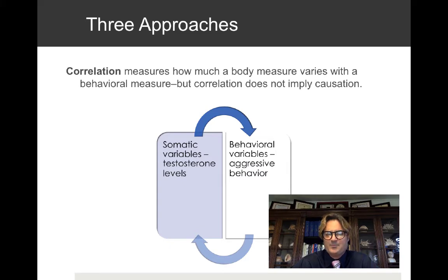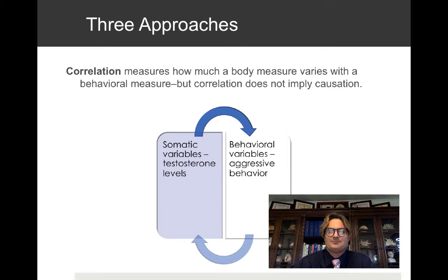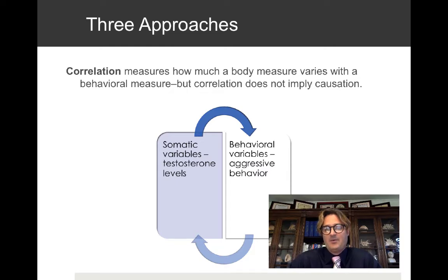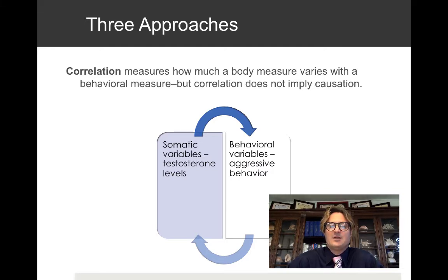The third approach is correlational research. Correlation measures how much a body measure varies with a behavioral measure, but correlation does not imply causation. For instance, we could look at how testosterone levels correlate with aggressive behavior without actually manipulating the variable. When testosterone levels go up, one is more likely to engage in aggressive behaviors — but when somebody wins a confrontation, their testosterone levels also go up, so it's not a unidirectional relationship.